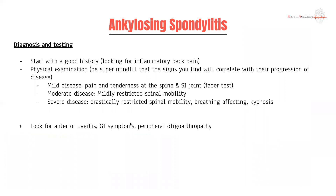In terms of diagnosing ankylosing spondylitis, start with a good history — establish that pattern of inflammatory arthropathic back pain, because most patients presenting with back pain will have a mechanical cause. On examination, the severity of signs correlates to disease progression. In mild disease, you might only experience pain and tenderness at the spine and sacroiliac joint line, assessed through the FABER test. In moderate disease, you might have mildly restricted spinal mobility. Severe disease would show drastically restricted spinal mobility, breathing issues, kyphosis, and scoliosis. Always look for extra-articular manifestations: anterior uveitis, IBD symptoms, and oligoarthropathies particularly with enthesitis and dactylitis.